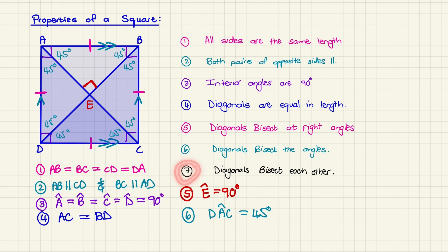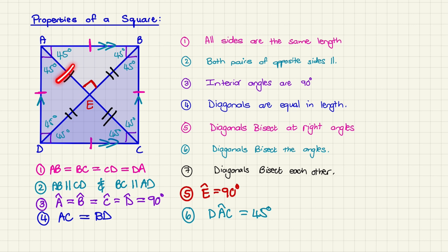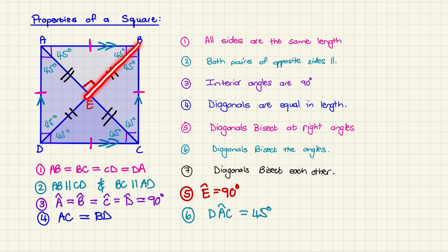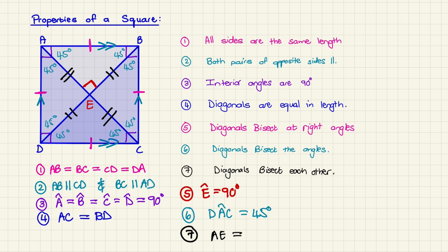Number seven: the diagonals bisect each other. As explained in property five, the diagonals cut each other in half, meaning AE = BE = CE = DE. We write that as AE = BE = CE = DE.